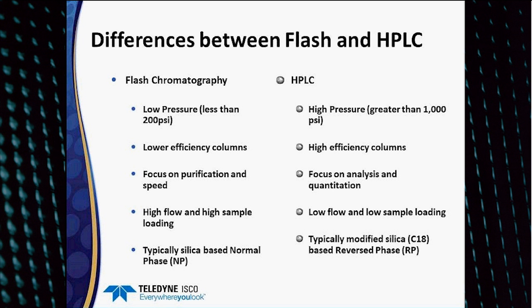HPLC, on the other hand, is a high pressure technique where pressures are greater than 1,000 PSI. With UPLC, ultra-high pressures can exceed 10,000 to 15,000 PSI. HPLC uses high efficiency columns with very small particles — in some cases sub-micron — and very small particle size distribution. The focus is on analysis and quantitation. Flow rates are low, and there is low sample loading to avoid overloading the column and to preserve good peak shape and resolution.